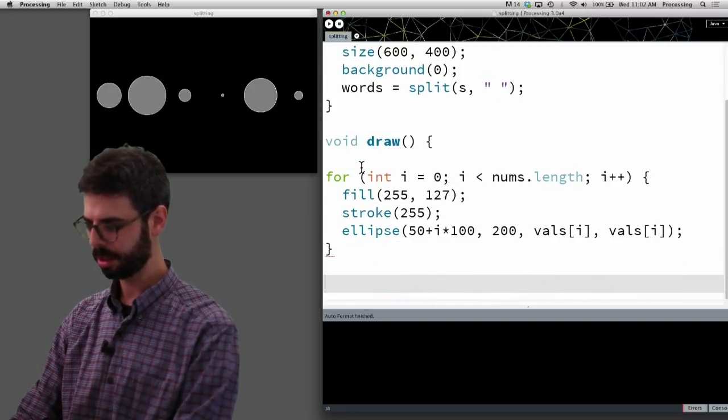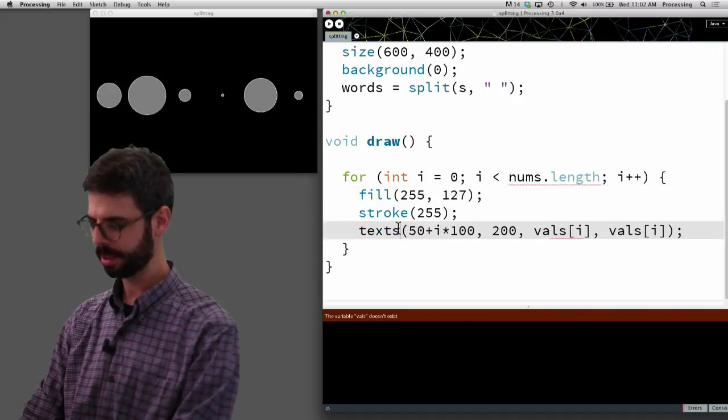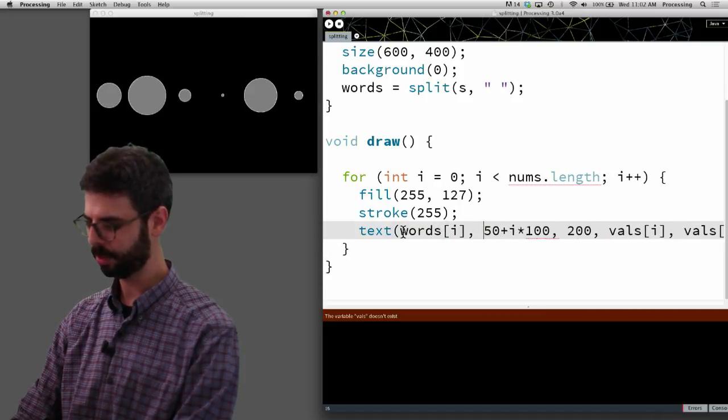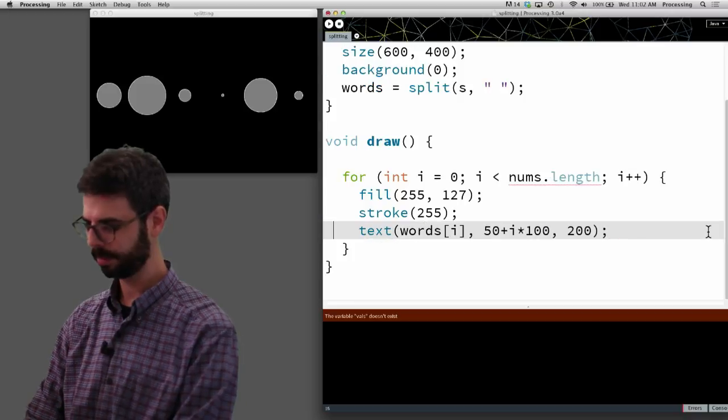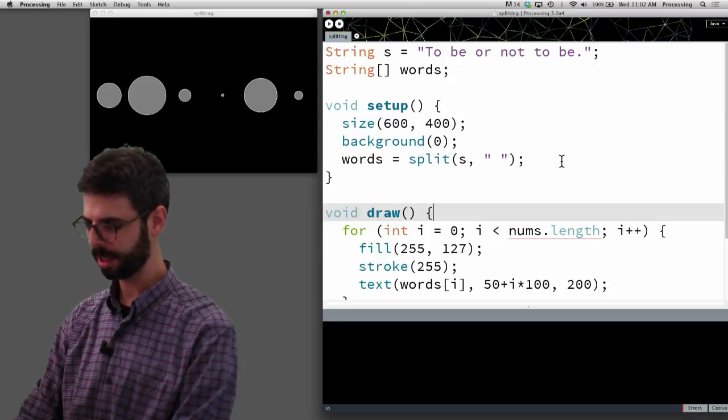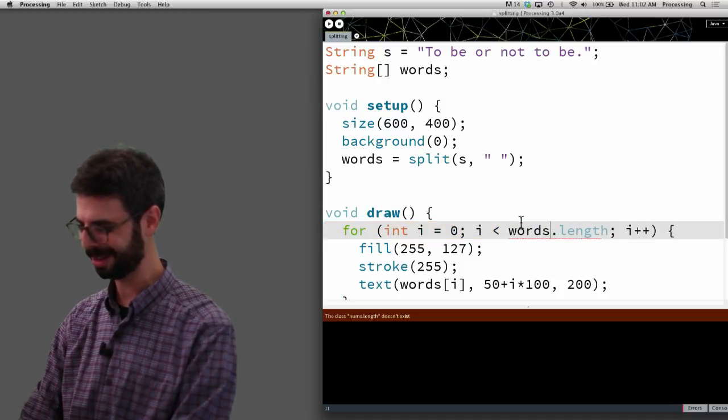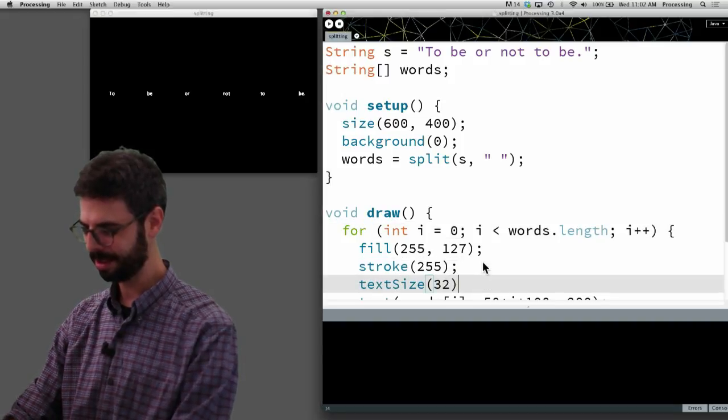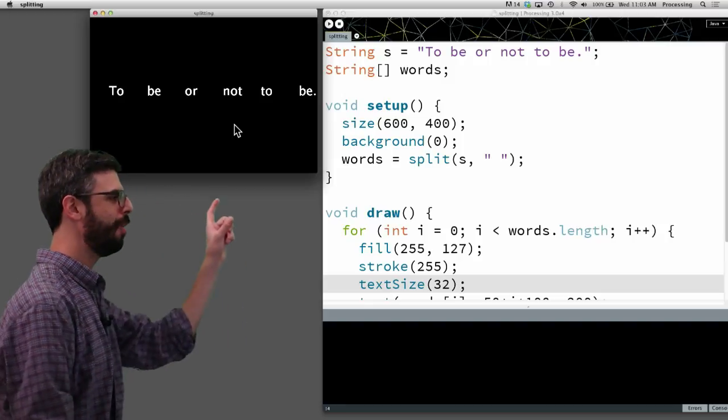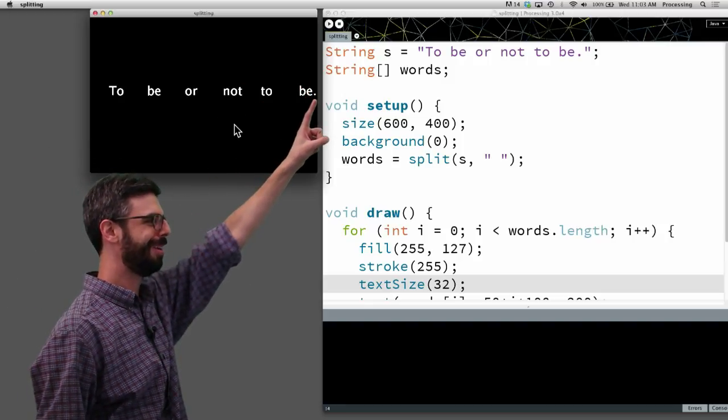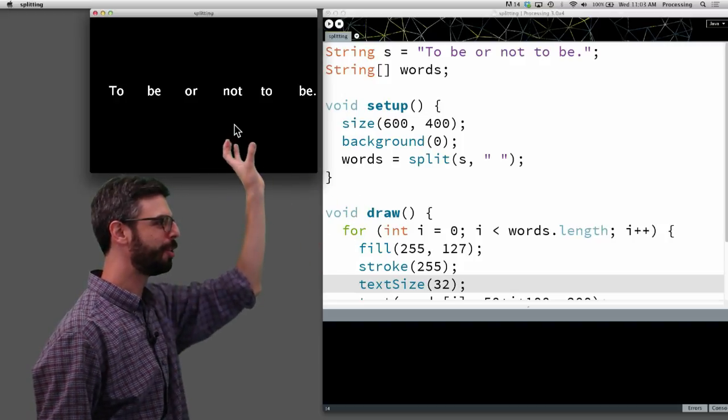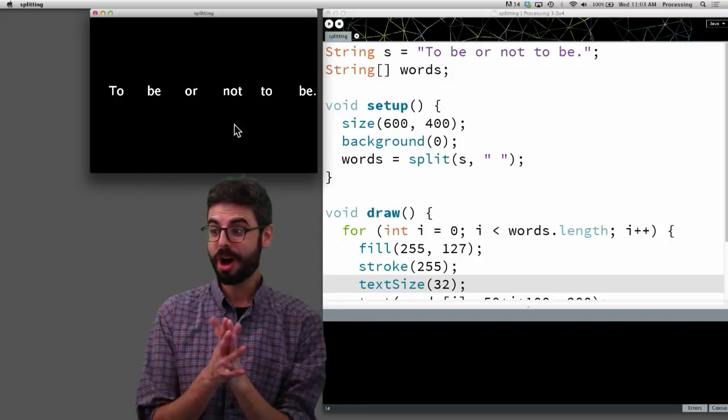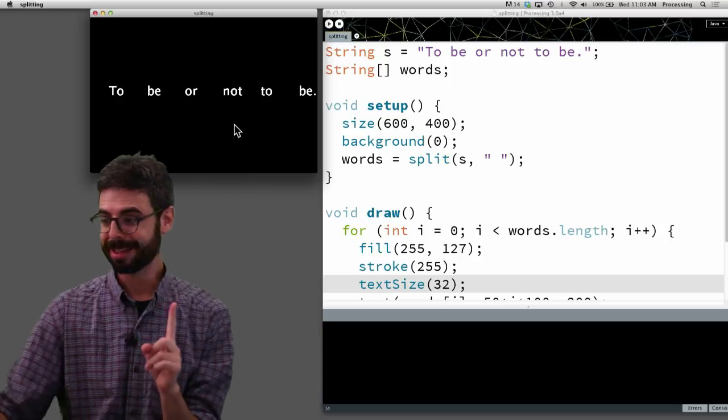And now in draw, instead of doing an ellipse at every moment, let's draw each word. So let's take a look at this. Run this. What did I get wrong? This is called words. And let's do text size 32 so we can see it a little bit better. There we go. Now we have a string we started with. We used split to split it up into an array of tokens. And then we're drawing each one of these words one at a time in an array. So we're kind of on the path here.